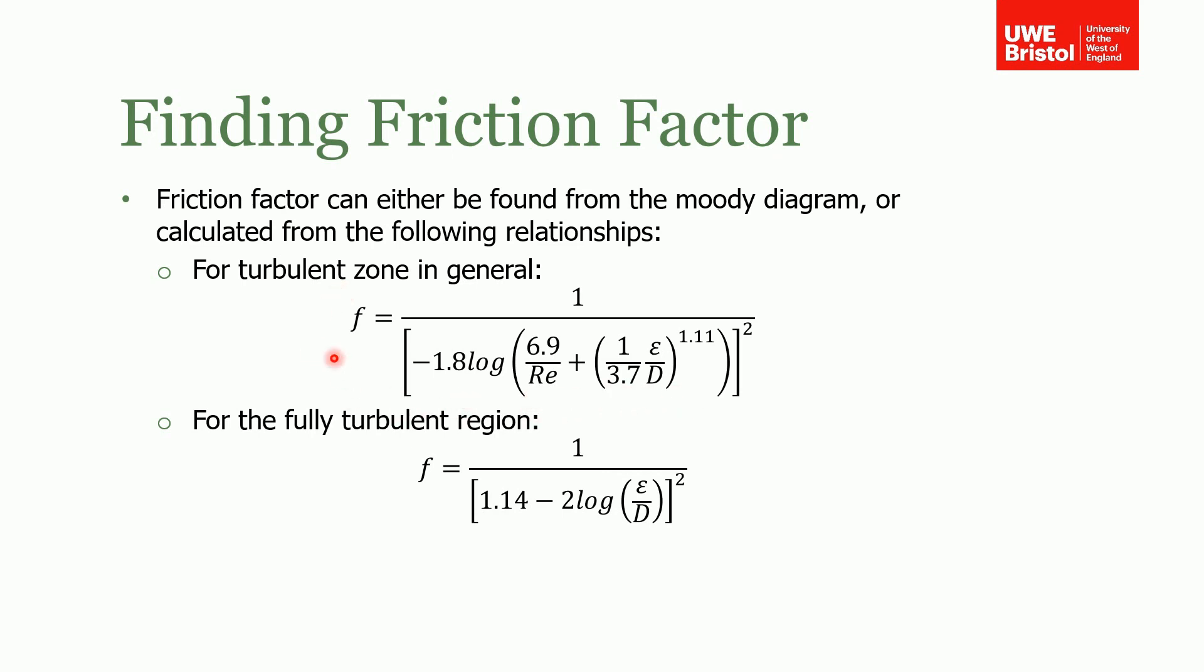In those instances you might be better off using this equation. This is for the turbulent zone in general. The friction factor, I won't read it out because you can see it's a fairly complicated relationship, but the friction factor is equal to this function of Reynolds number and pipe roughness. Basically, this describes the equation for each of those lines on the Moody chart. If you're interpolating between different Reynolds numbers or different pipe roughness, you might be better to use this equation. Notice for the fully turbulent region there is no Reynolds number in here, because of the fact that the friction factor becomes independent of Reynolds number in the fully turbulent region.